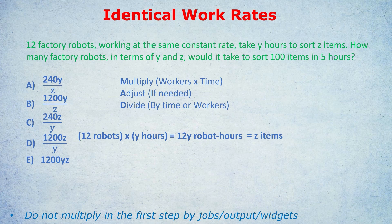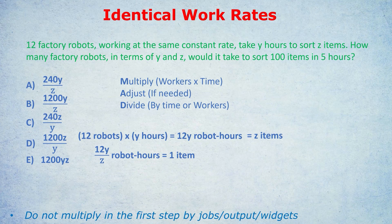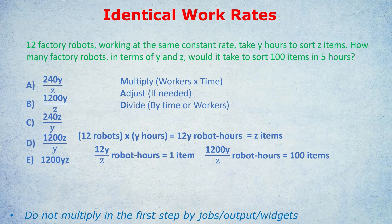Now we adjust. The question asks us to sort 100 items, not Z items. Divide both sides by Z to find the time for one item: 12Y/Z robot hours per item. Then multiply by 100 to scale up: 1200Y/Z robot hours for 100 items. The last step of MAD is divide — they gave us a deadline of five hours, so divide by five. Dividing 1200Y/Z by five gives 240Y/Z, which is answer A.